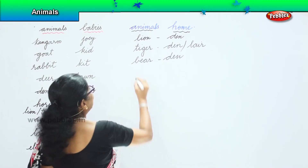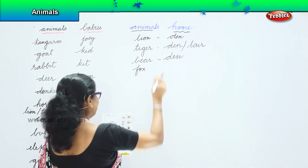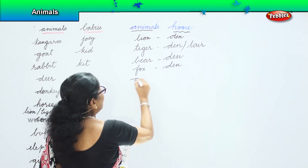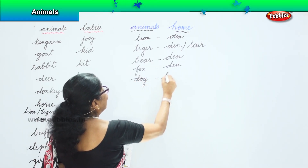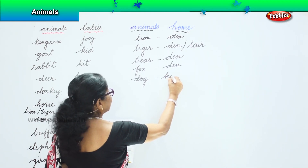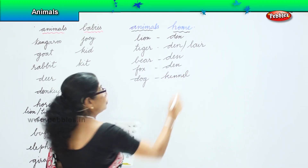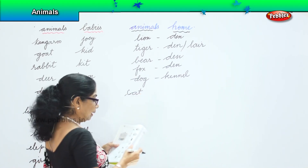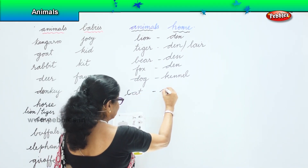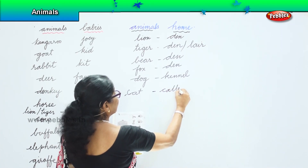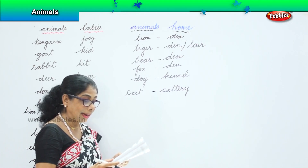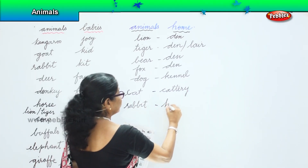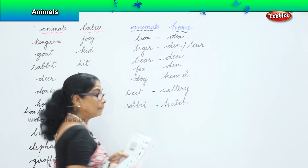Now let's look at the fox. The fox's home is also called a den. The dog's house is called a kennel. The cat lives with us, but the cat's home is also called a cat tree. The rabbit lives in a hutch.